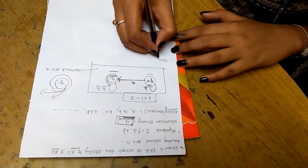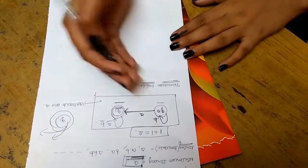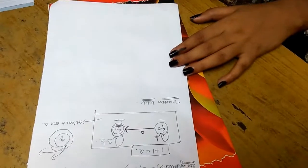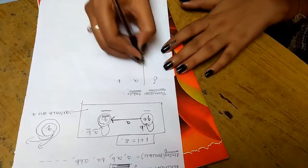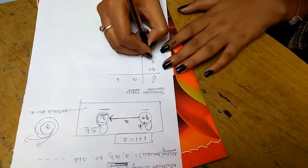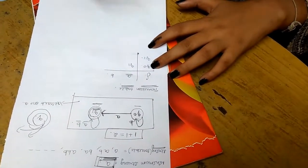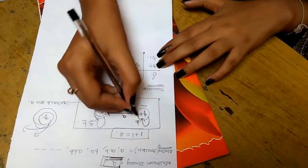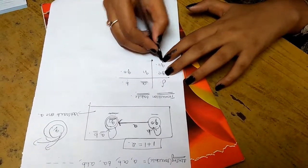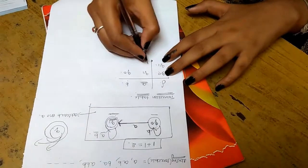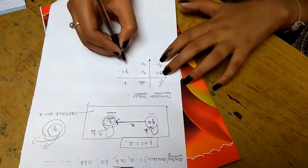Let us write a transition table for the same question — to accept a string having at least one A. The input symbols are A and B. The states are Q0 and Q1. When Q0 encounters A, it goes to Q1; when Q0 encounters B, it stays at Q0. When Q1 encounters A, it stays at Q1; when Q1 encounters B, it stays at Q1.